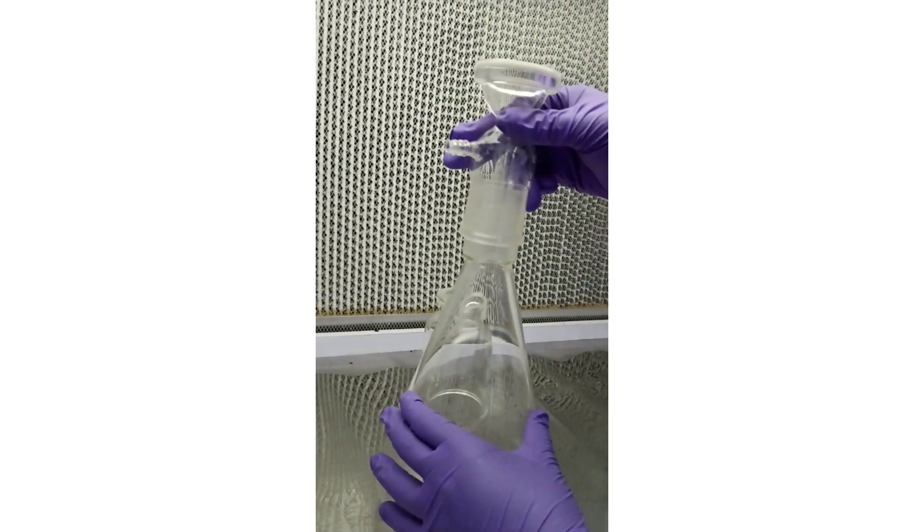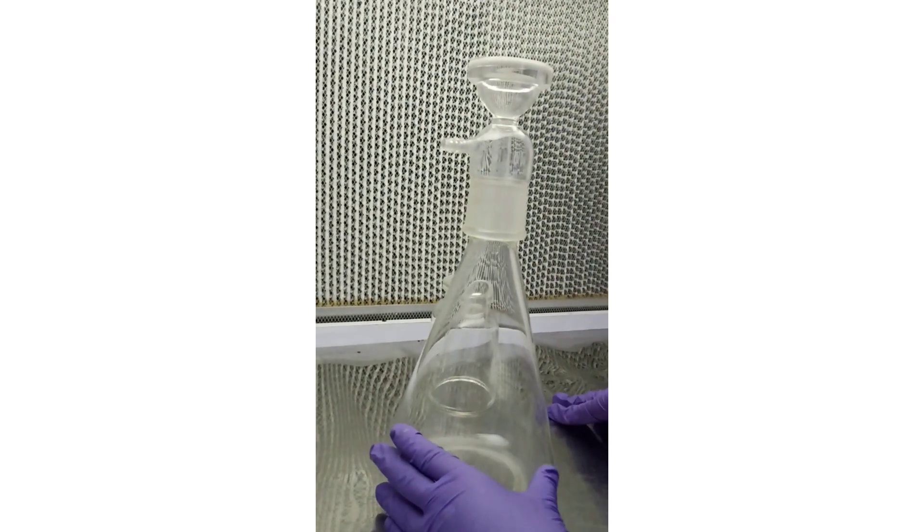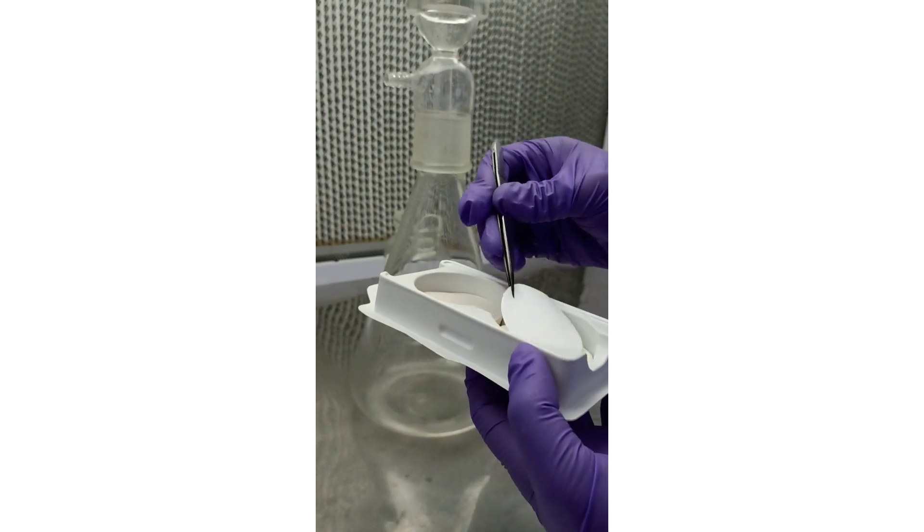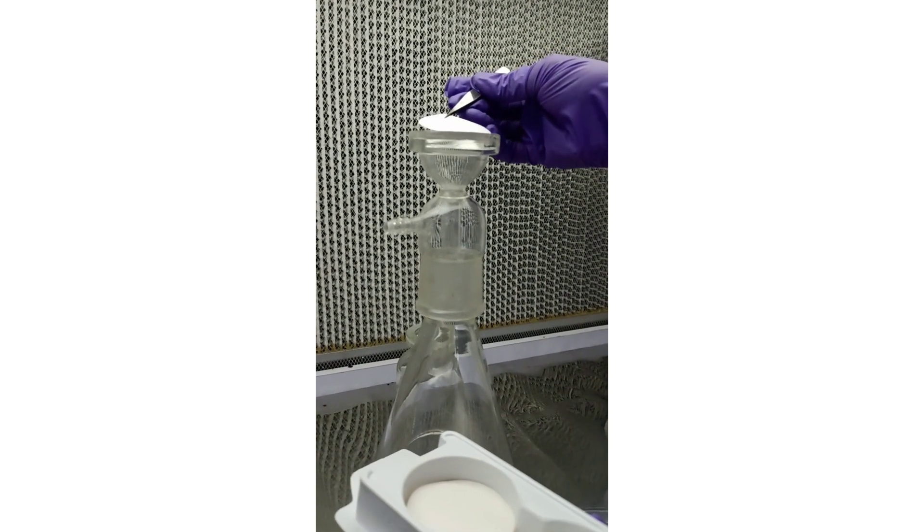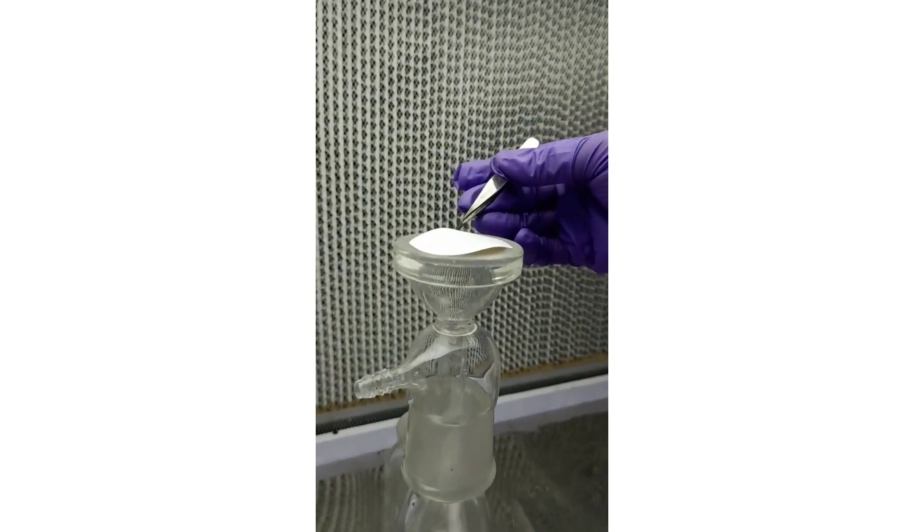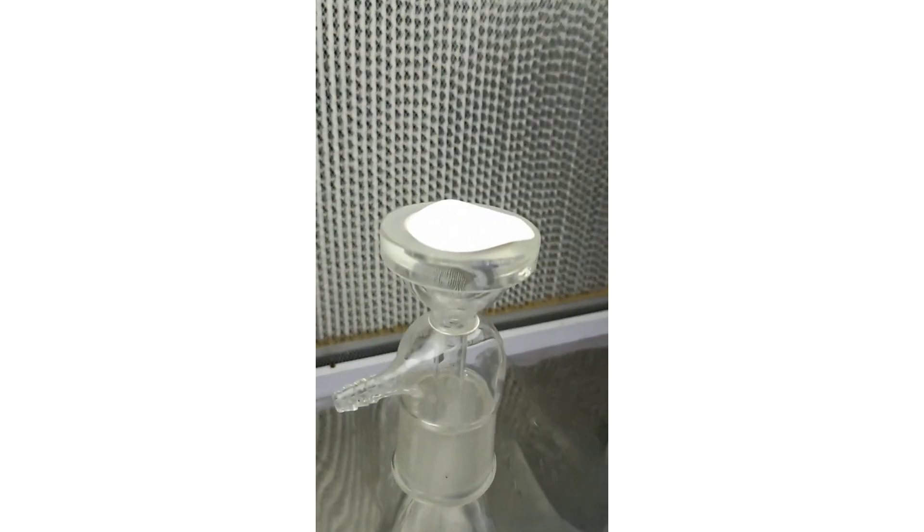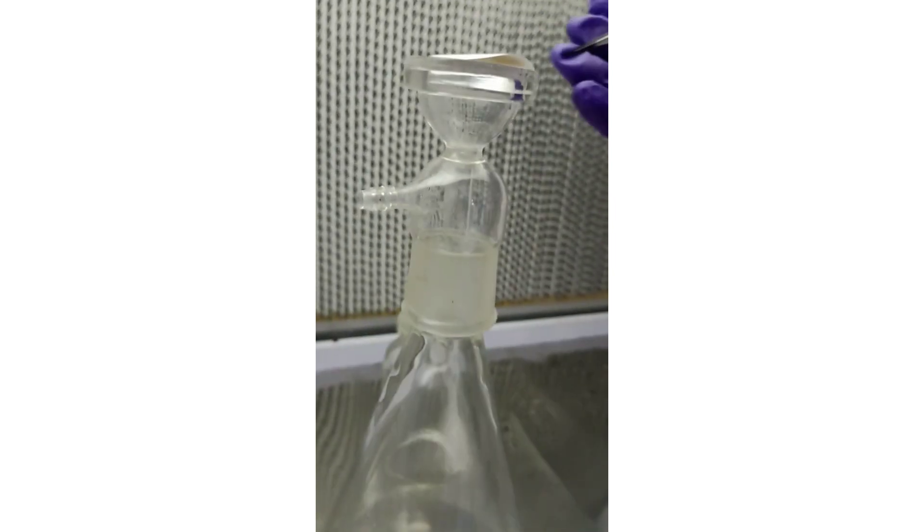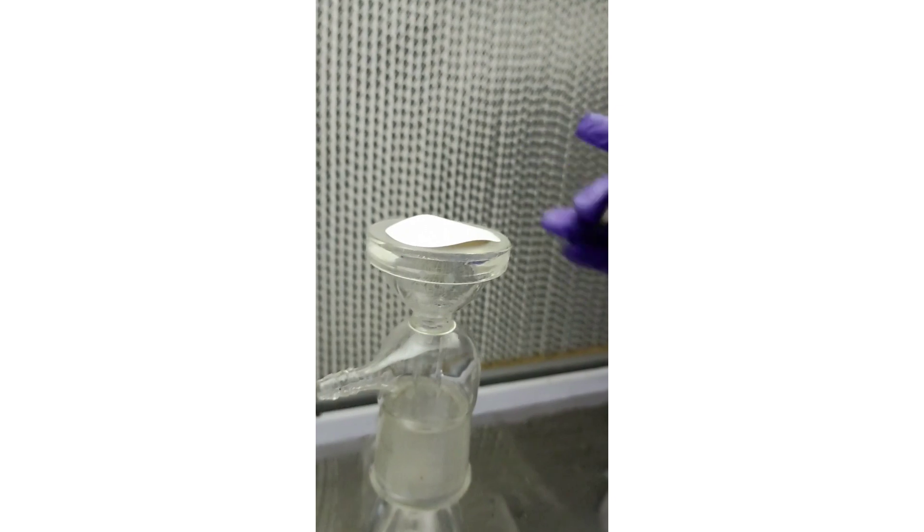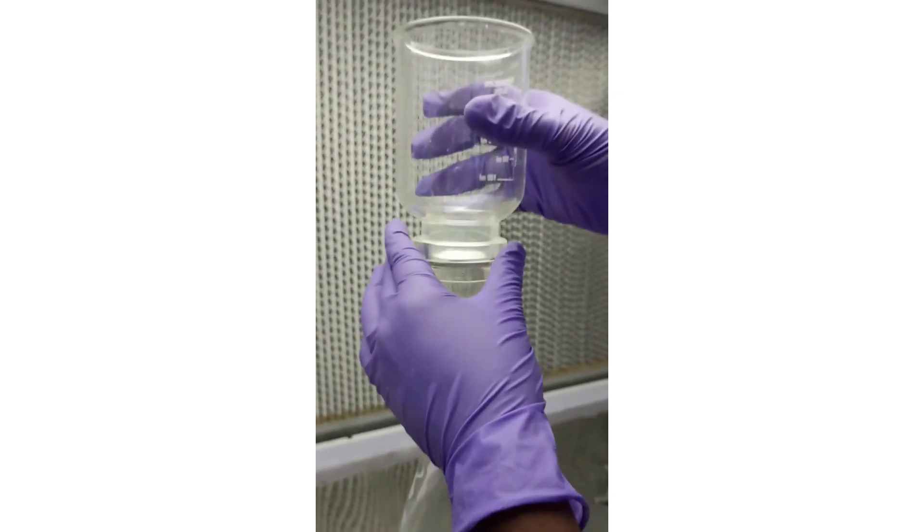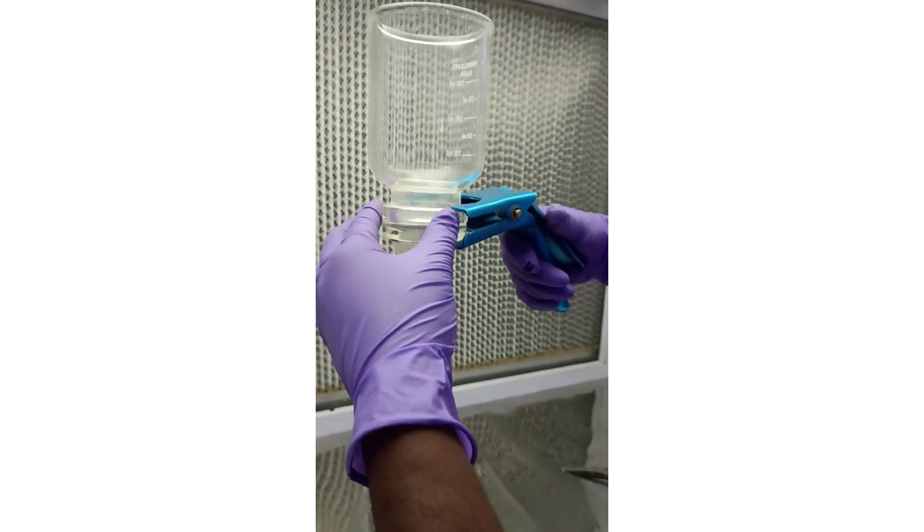After autoclaving, arrange the membrane filtration apparatus. Attach the middle part (the base) with the collector flask and place the filter paper on it properly with the help of sterile forceps. After placing the filter paper, place the upper part (the funnel) properly onto the filter paper and fix the parts using a clamp.